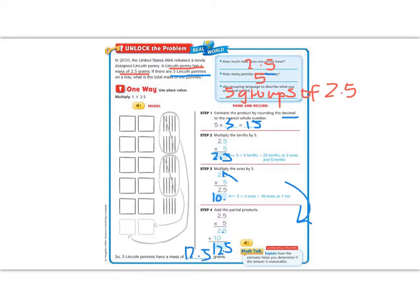Now I also want to show you another method of doing this. When I do this, I write them all like this, 2.5 times 5, just like the book did.